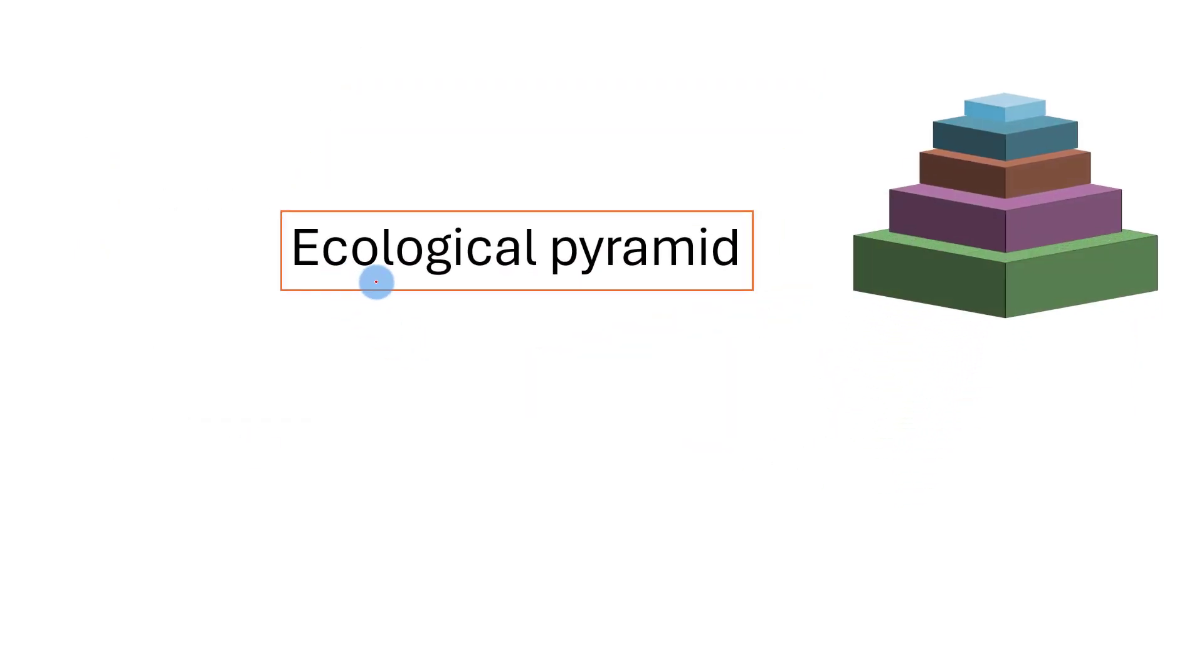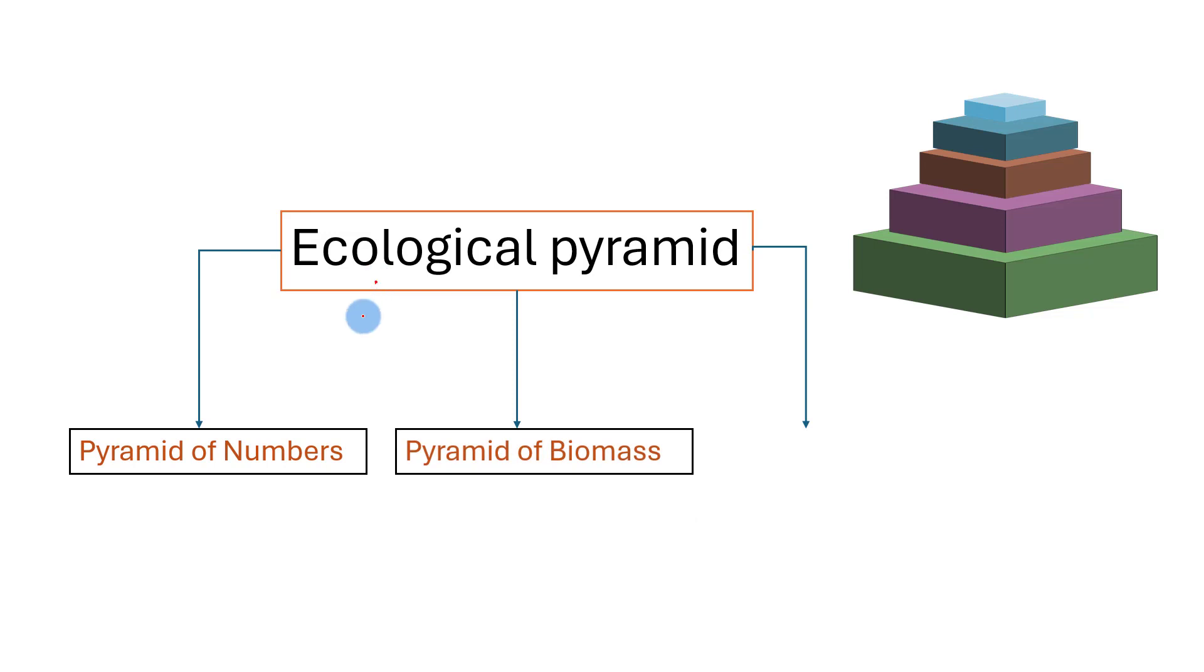Accordingly, ecological pyramids are classified as Pyramid of Numbers, Pyramid of Biomass, and Pyramid of Energy. Ecological pyramids are prepared based on the number of organisms, the biomass of the organisms, and energy in the biomass of organisms at each trophic level.